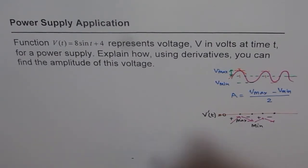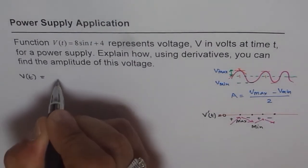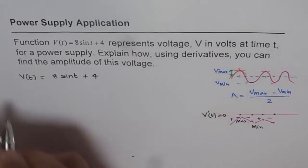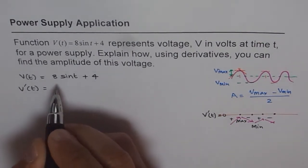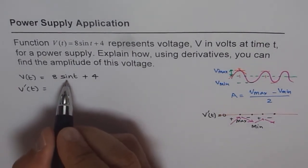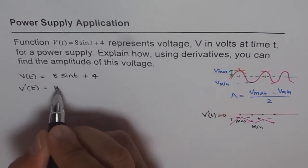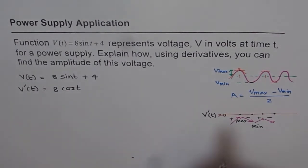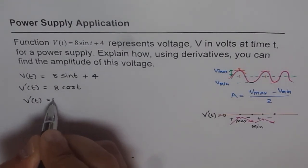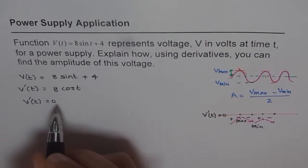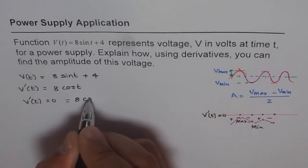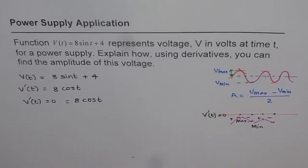So let's start. We have V(t) = 8sin(t) + 4. V'(t) equals the derivative of this: the derivative of sine is cosine, so V'(t) = 8cos(t). The derivative of 4 is 0. Setting V'(t) = 0 means we want to find the zeros for cos(t), so 8cos(t) = 0. When is cos(t) = 0?